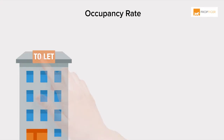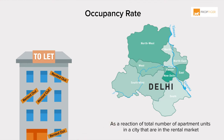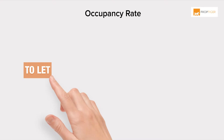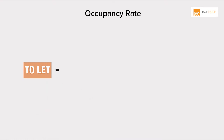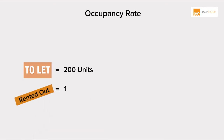Hi everyone. Occupancy rate is the number of apartments in a city that are rented out as a fraction of the total number of apartment units in a city that are in a rental market. For example, if a residential development intended for renting has 200 units and 150 of them have tenants, the occupancy rate is 75%.